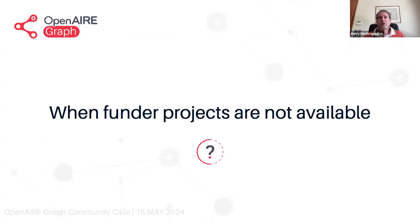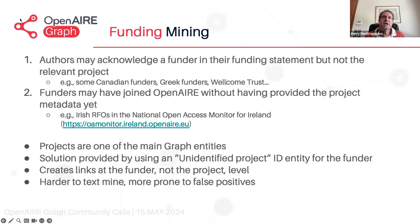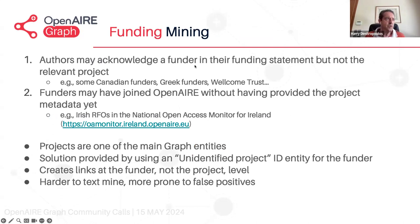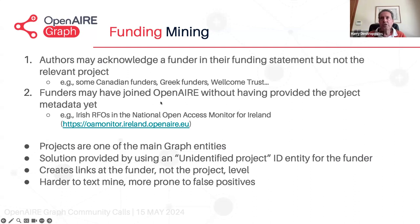What happens when funded projects are not available? There are two cases. First, authors may acknowledge a funder in their funding statement but not the relevant project. In some papers with Canadian funders, for example, you'll see they mention the funder but not the actual project. Greek funders do that — half of their publications end up being like that. We used to see that also with people acknowledging Wellcome Trust. Second, funders may have joined OpenAIRE but not yet provided their project metadata.